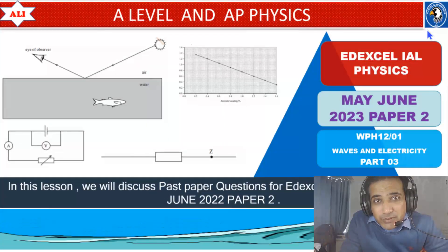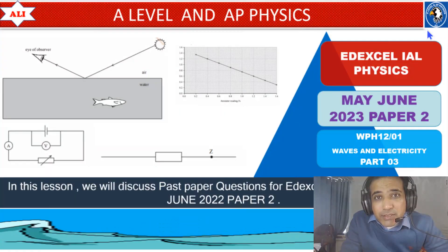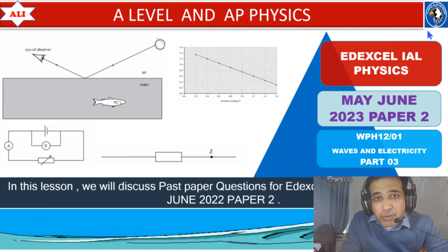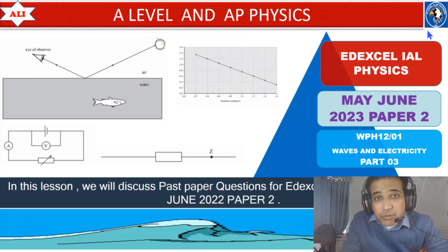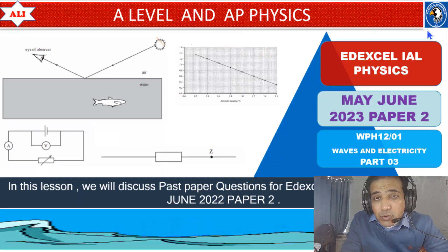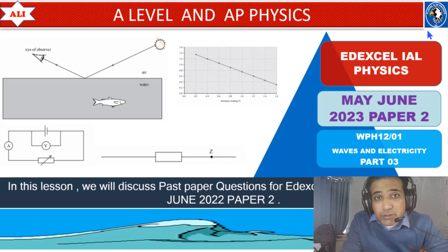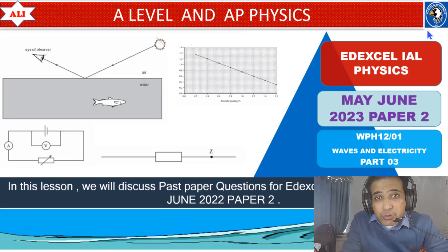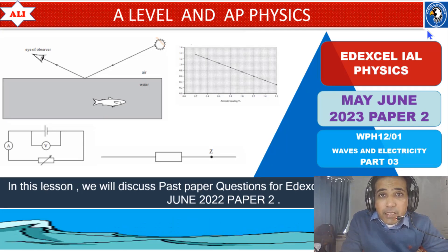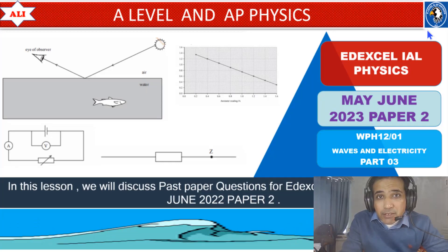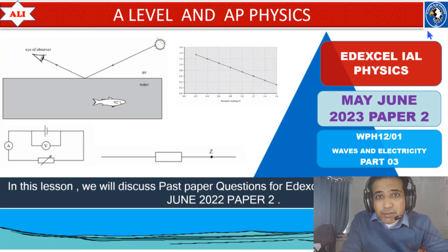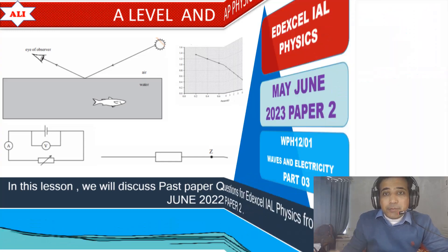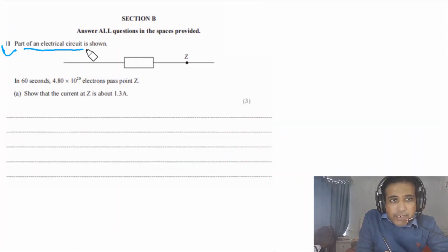Welcome to A-level and AP Physics. In today's lesson we will discuss past paper questions from May-June 2023 Paper 2. We will start from Question 11. As always, we will discuss these questions in detail so you can improve your conceptual understanding of physics and have a better understanding of these questions. Let's study together, let's improve together.